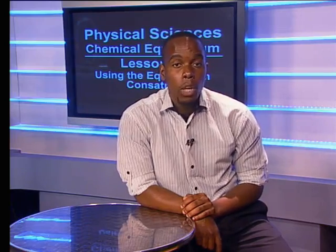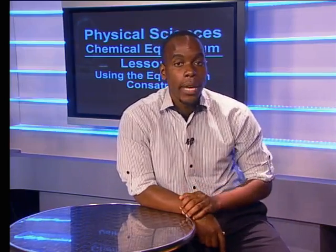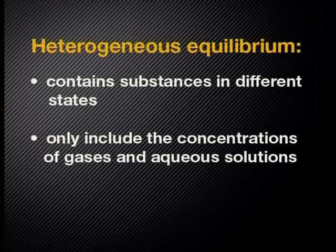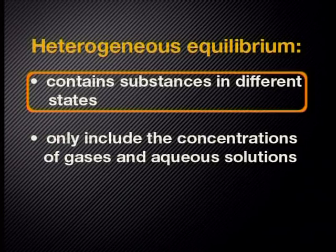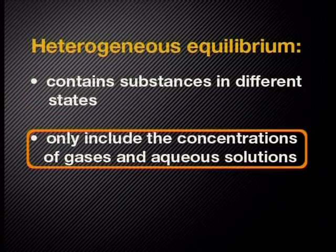Amira and her team are going to show us some of the differences when working with heterogeneous reactions and do some more equilibrium constant practice. A heterogeneous equilibrium contains substances in different states. We only include the concentrations of gases and aqueous solutions. Solids and pure liquids are left out because they have a constant ratio of moles and volume. Here are two examples of reactions with solids and pure liquids.